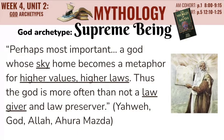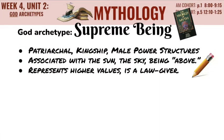Perhaps most importantly, a supreme being is a god whose sky home becomes a metaphor for higher values and higher laws. Thus, the god is more often than not a law giver and a law preserver. We see this in stories where a god passes down rules to his people, such as Yahweh or Ahura Mazda. Quick review: the supreme being is patriarchal — a father figure — relating to kingship and male power structures. He's often associated with the sun, the sky, and being above others both physically and metaphorically, and he represents higher values and is a law giver.